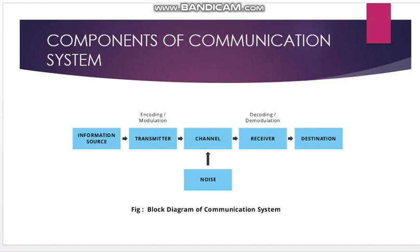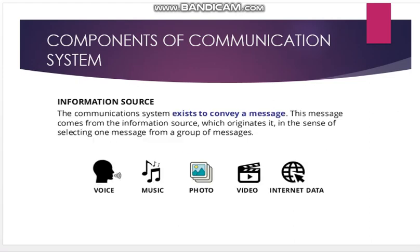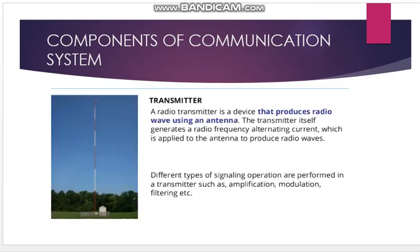The information source — voice, music, photo, internet data, video — conveys the message. The transmitter encodes and modulates the signal, and gives it to the channel. The transmitter is a device that produces radio waves using an antenna; it generates a radio frequency alternating current which is applied to the antenna to produce radio waves. Modulation and amplification are also used in the transmitter section.